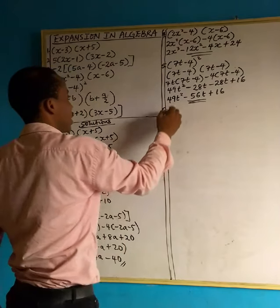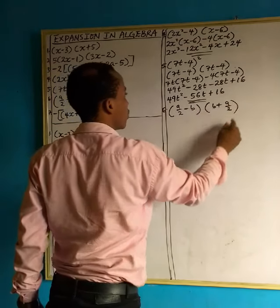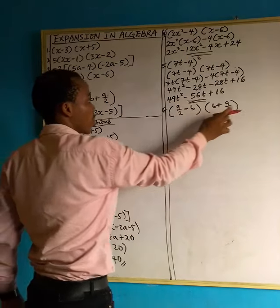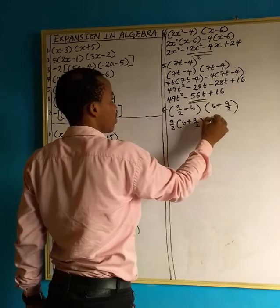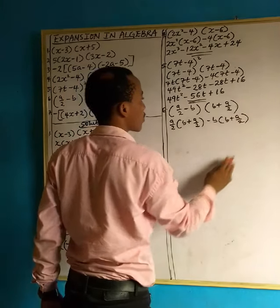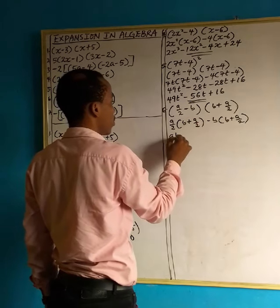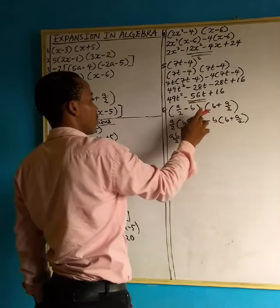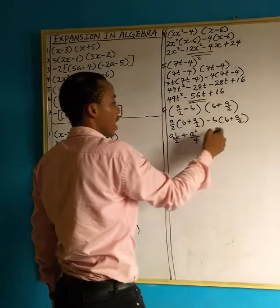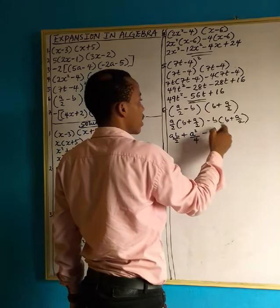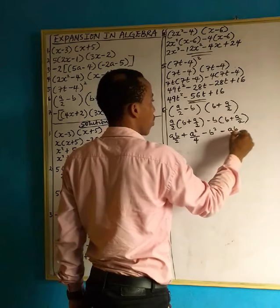Question 6 says: open bracket a over 2 minus b, open bracket b plus a over 2. We take a over 2 and multiply by everything in bracket b plus a over 2, then minus b into bracket b plus a over 2. So we have: a over 2 multiplied by b gives ab over 2. a over 2 multiplied by a over 2 gives a squared over 4. Minus b multiplied by b gives minus b squared. Minus b multiplied by positive a over 2 gives negative ab over 2.